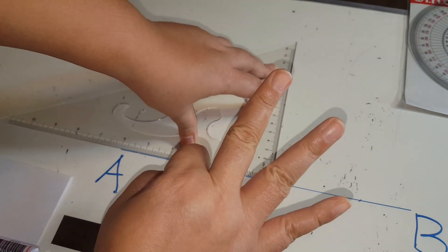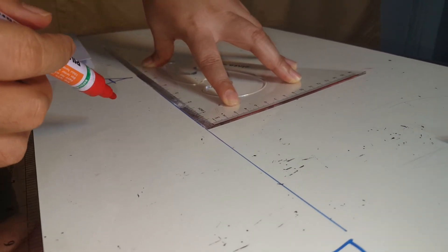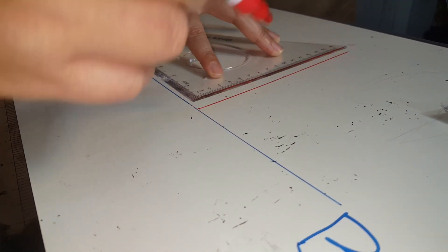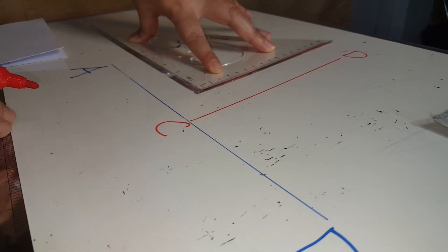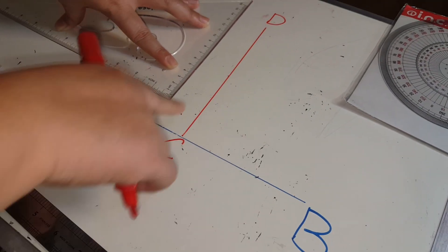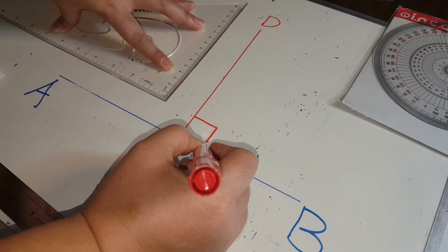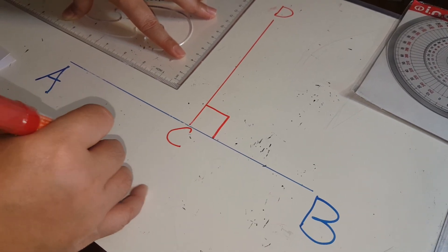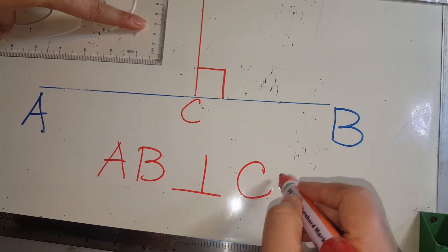Step three. Use the edge of the set square to draw line CD. Line AB is perpendicular to line CD because they form a right angle. We can say line AB is perpendicular to line CD.